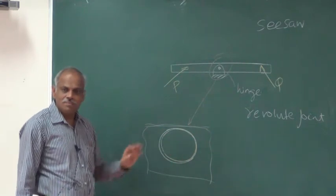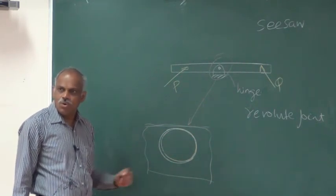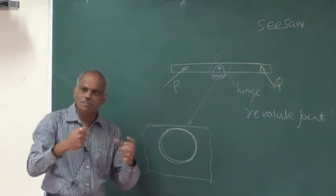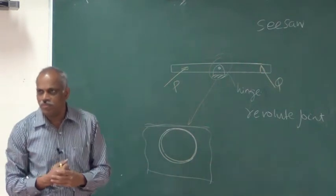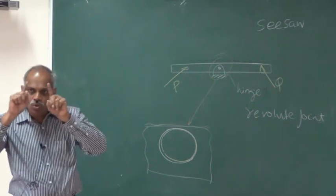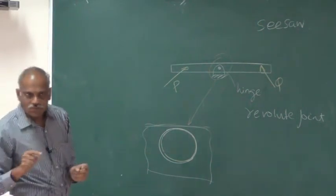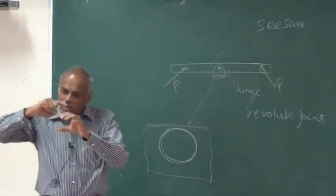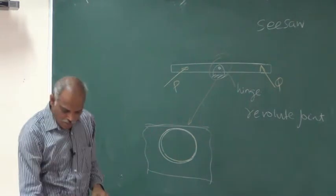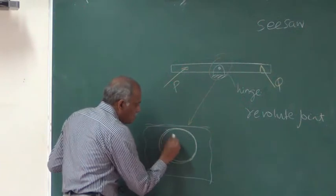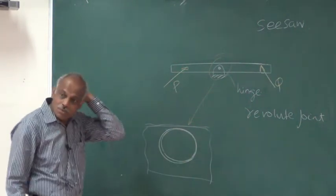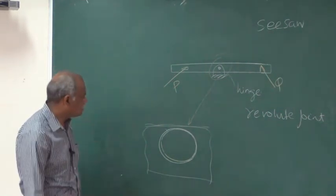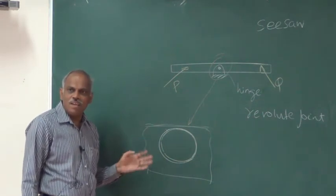The shaft will invariably be smaller than the hole. When there is force interaction between them, the interaction will not happen throughout the entire surface — only part of the surface will be in contact. Because where there is clearance, no force interaction can happen.